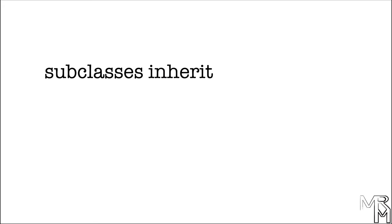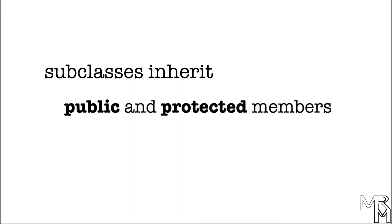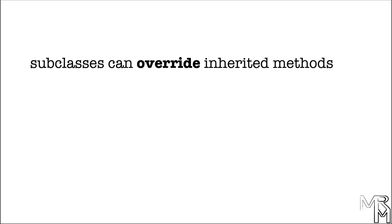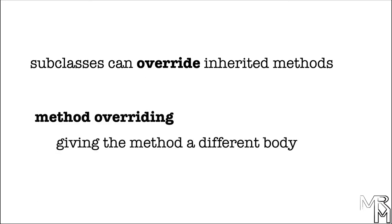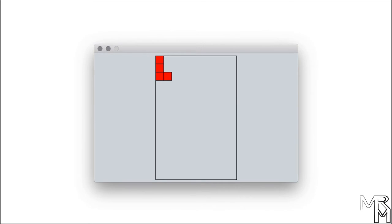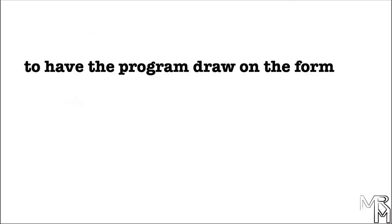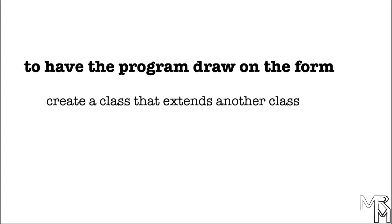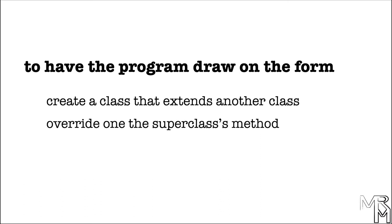Now let's talk in a bit more detail about what exactly subclasses inherit from superclasses. In Java, subclasses inherit public and protected members, which means that subclasses gain access to public and protected members of their superclasses. One thing a subclass can do with an inherited method is it can override that method. Overriding a method means providing a different body for the method. Our first step is to have a program draw a Tetris block on the form, and one way to do that is to create a custom class that extends another class and overrides one of that class's methods.